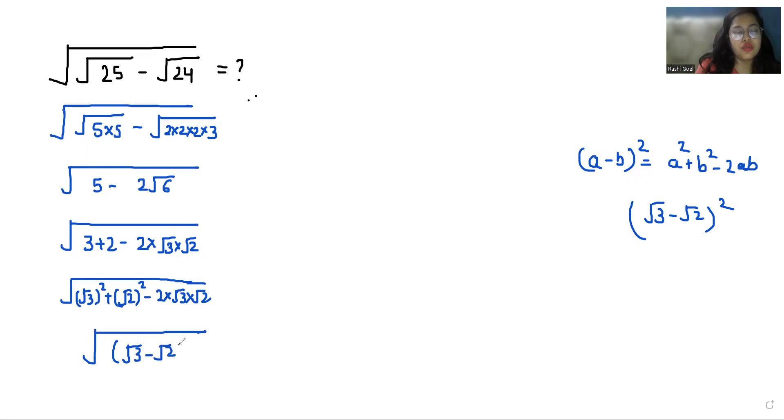So square root root 3 minus root 2 whole square. With the help of this square, this square root eliminates, so the answer of this is root 3 minus root 2.